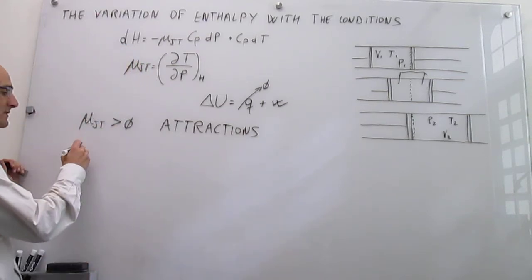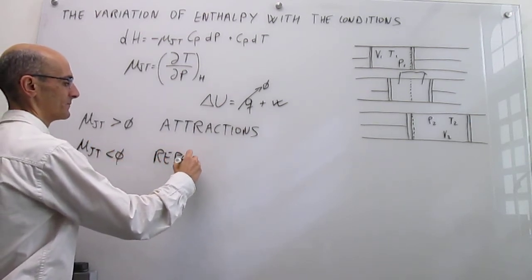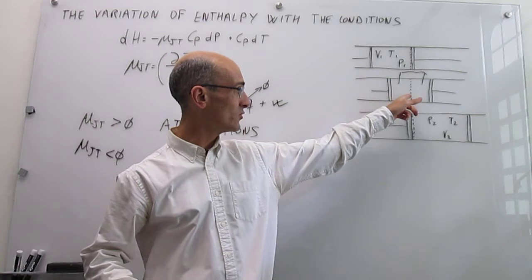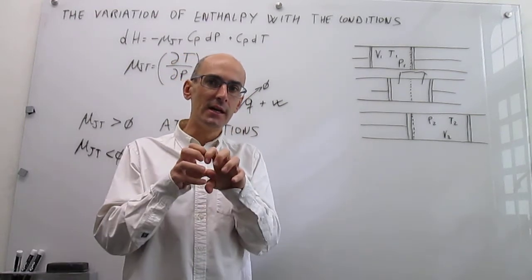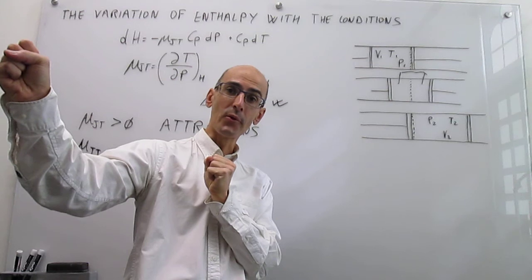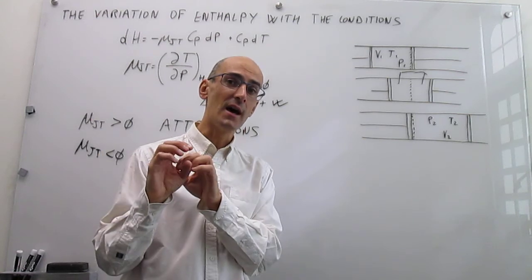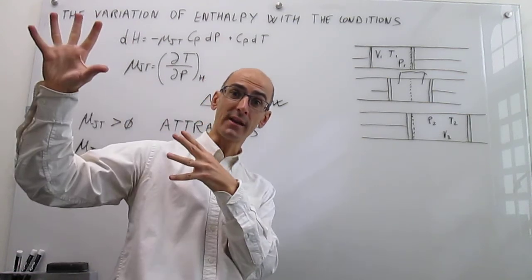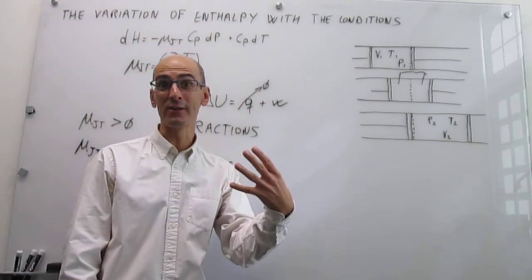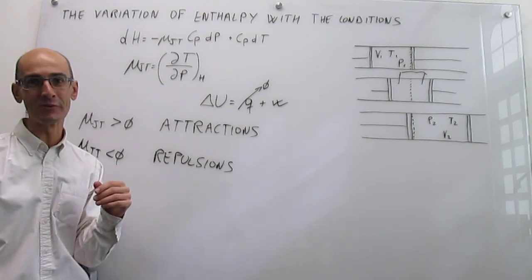Conversely, if the Joule-Thomson coefficient is negative, repulsions are dominant. When gas particles get very close to each other passing through the membrane, repulsions cause them to emerge on the right-hand side with a larger kinetic energy than they would otherwise have. That increased kinetic energy means the gas heats up — it travels at higher speeds than it would without those repulsive interactions. That is how the sign of the Joule-Thomson coefficient is explained.